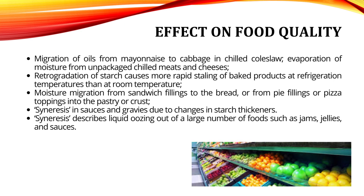Chilling affects the quality of food in several ways: migration of oils from mayonnaise to cabbage in chilled coleslaw; evaporation of moisture from unpackaged chilled meats and cheeses; retrogradation of starch, which causes more rapid staling of baked products at refrigeration temperatures than at room temperature; moisture migration from sandwich fillings to bread, or from pie fillings or pizza toppings into pastry or crust; and syneresis in sauces and gravies due to changes in starch thickeners.